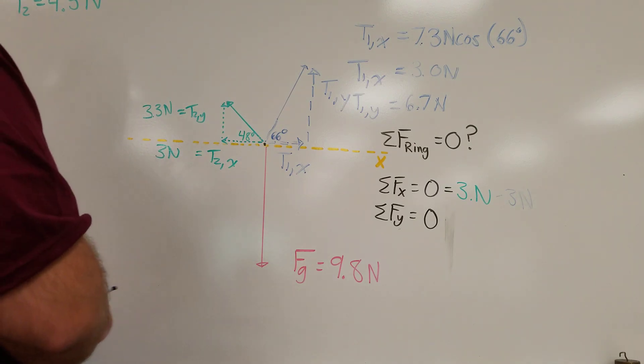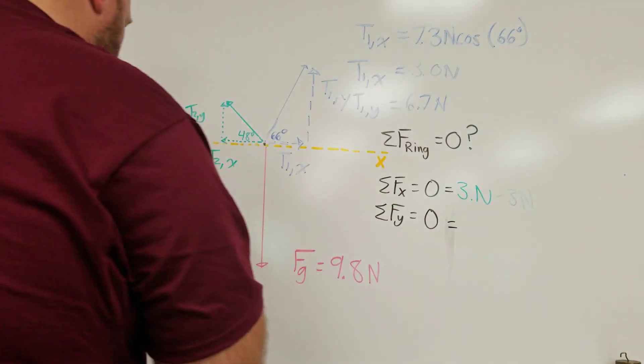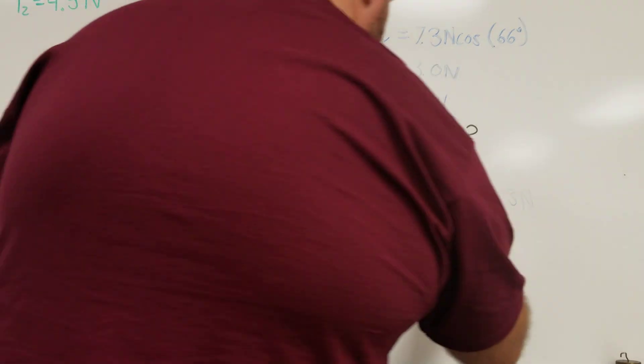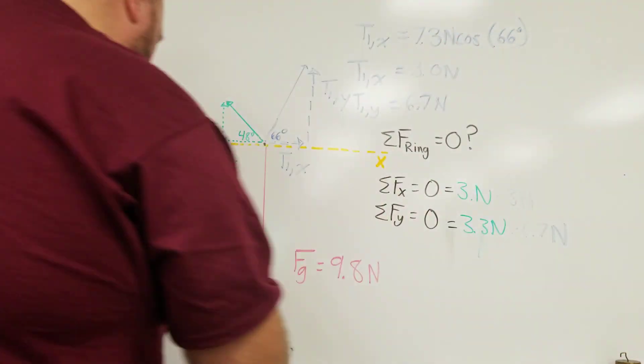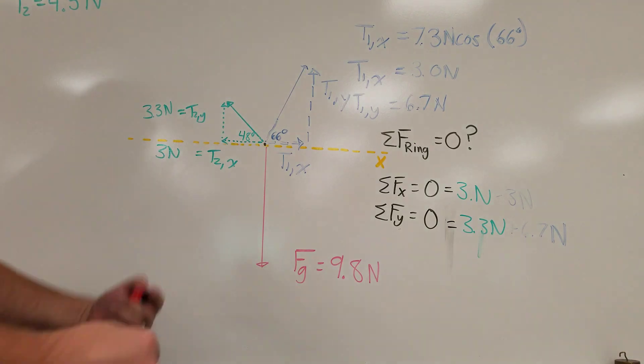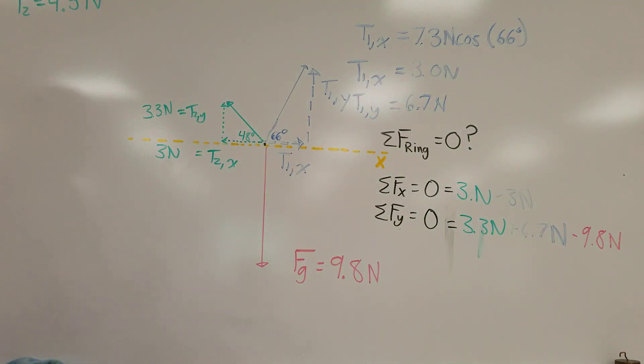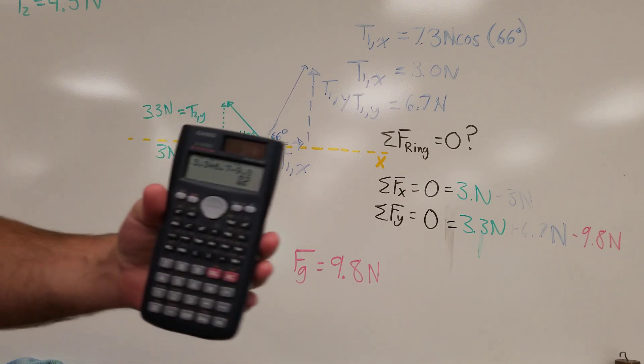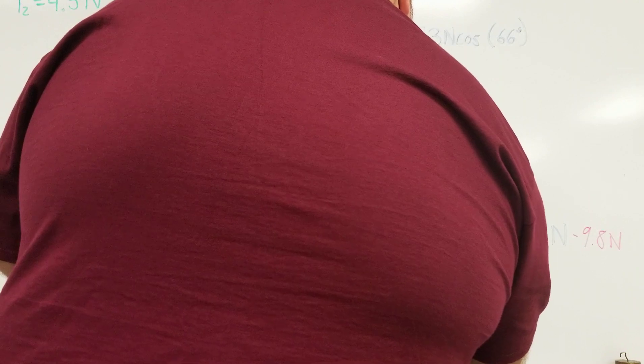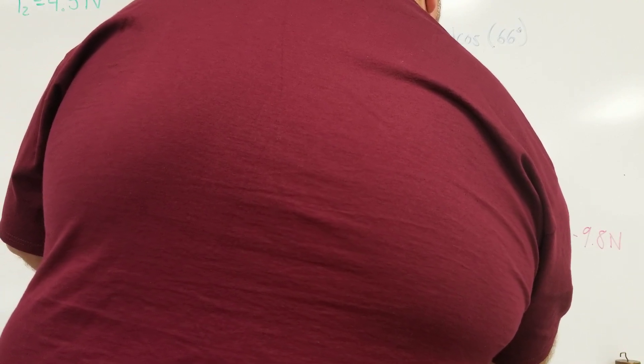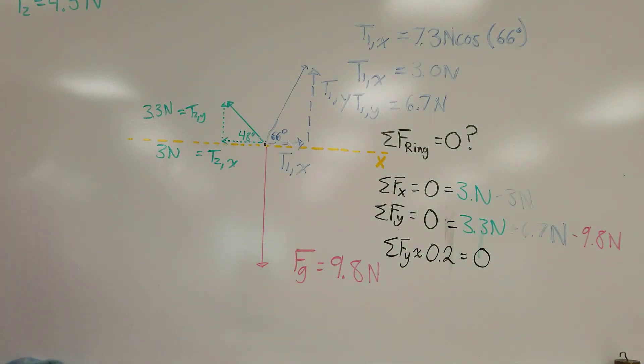Now let's do the same thing in the Y direction. So my net force in the Y direction equation would look like, I've got a green arrow going up, it's 3.3 Newtons. And then I've got a blue arrow going up, so plus 6.7 Newtons. And then a red arrow going down, so minus 9.8 Newtons. And so if you now pull out your trusty calculator and you do 3.3 plus 6.7 minus 9.8, you get essentially zero. Zero point two is the exact number that I get.